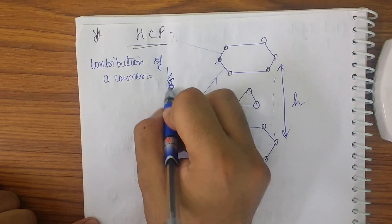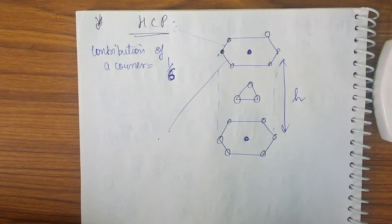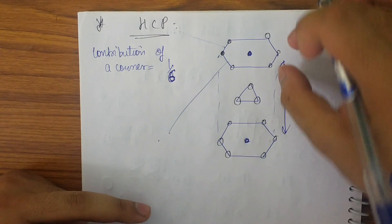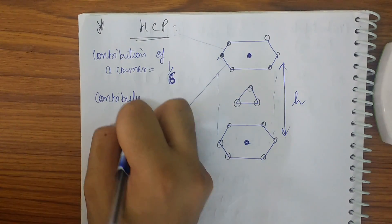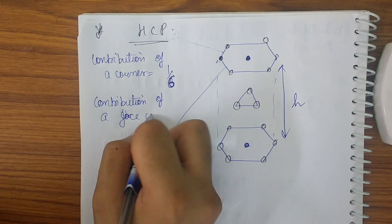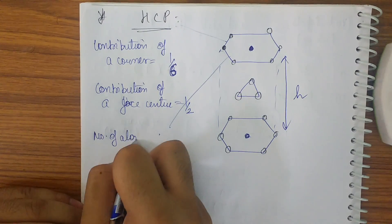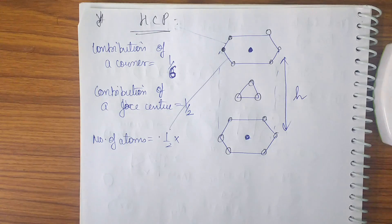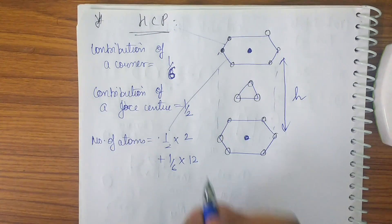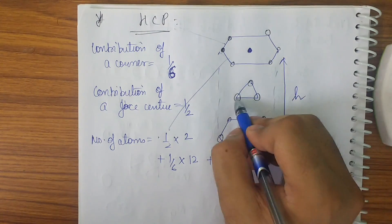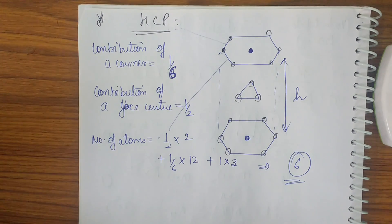In HCP, the contribution of a corner atom is 1/6. Face center atoms are shared by two cells, so contribution = 1/2. Number of atoms = (1/2 × 2 faces) + (1/6 × 12 corners) + (1 × 3 interior atoms) = 1 + 2 + 3 = 6 atoms total.